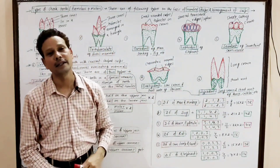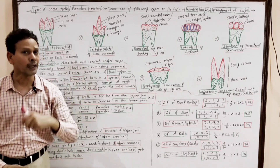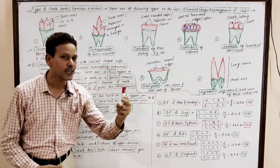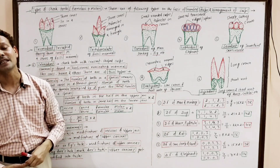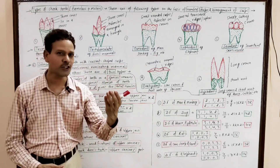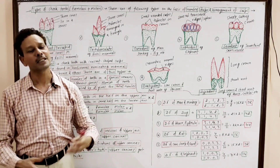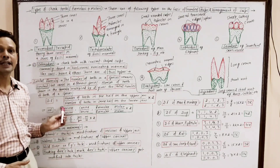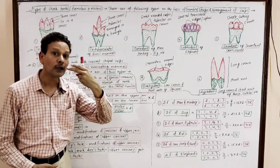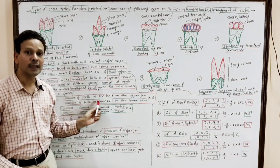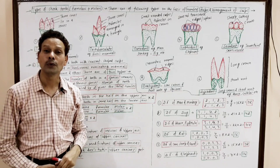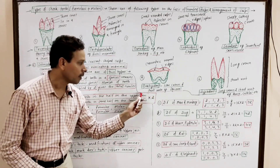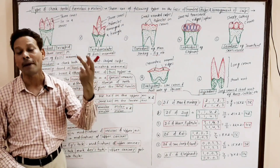Now I will discuss some important dental formulas for competitive exams. The dental formula gives the exact number of teeth in a member of a species. It gives information that the number of teeth in a species is constant, but it varies in different species. The dental formula is represented as the number of teeth in one half of the upper jaw and one half of the lower jaw, and the sum multiplied by two gives the total number of teeth.